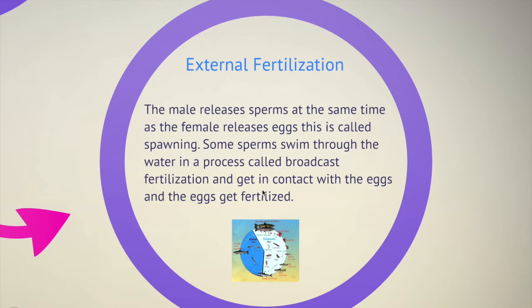For external fertilization, remember this important point: we need water. It could be a small amount of water or a large amount, but we need some moisture for the sperm to travel. Without water — on a dry place or dry area — it is impossible for external fertilization to occur. The sperm must be released in a watery environment in order to reach and fertilize the eggs.